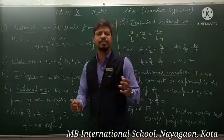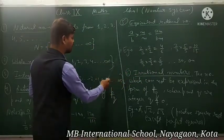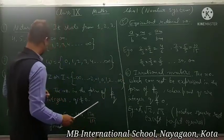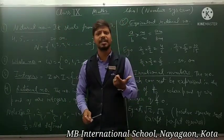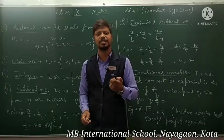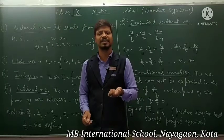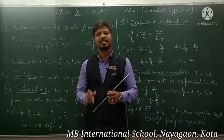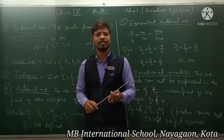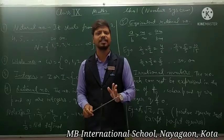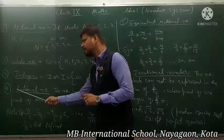On the number line, zero is at the center. Numbers on the right-hand side of zero are positive, and numbers on the left-hand side are negative. Zero is also an integer, but zero has no sign — it is neither positive nor negative. Numbers with a negative sign are negative integers, and numbers with a positive sign are positive integers. Zero is neither a negative nor a positive integer.